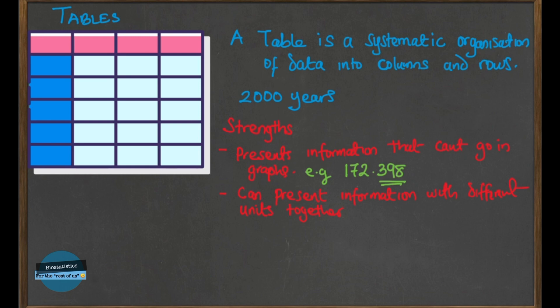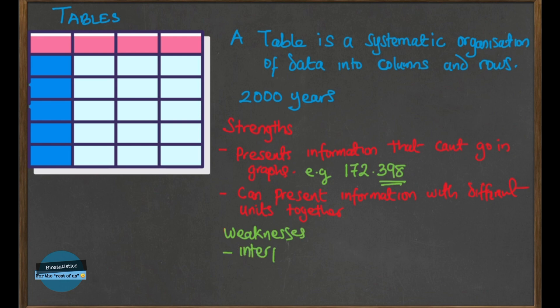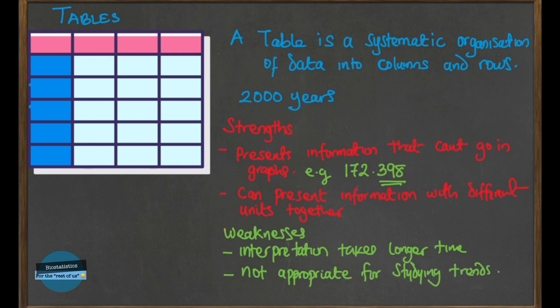Despite its strong strengths, a table has some shortfalls. One shortfall is that interpretation of information takes a little longer in tables than in graphs, because in tables you have the chance to put different information, and if one is not careful the table will contain so much data in different formats that it will take considerable time to interpret and understand. That is the main weakness of a table — interpretation takes some time.